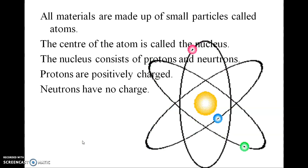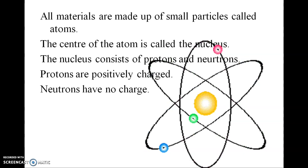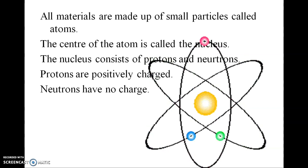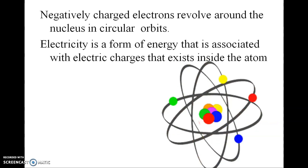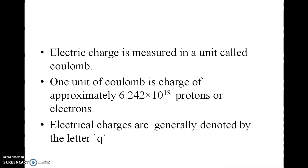All materials are made up of small particles called atoms. The center of an atom is called the nucleus, which consists of protons and neutrons. Protons are positively charged and neutrons have no charge. Negatively charged electrons revolve around the nucleus in circular orbits. Electricity is a form of energy associated with the electric charge that exists inside the atom.